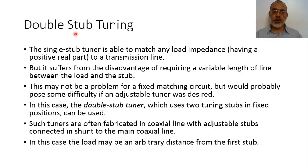This occurs after a distance D1 from Z0. Then we add a shunt susceptance equal to minus jB, or a series reactance equal to minus jX, such that the input impedance or input admittance after the susceptance or reactance becomes Z0 or Y0. In this case we can match an arbitrary load to a transmission line of characteristic impedance Z0.